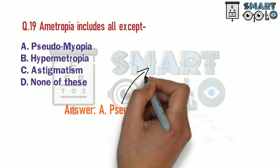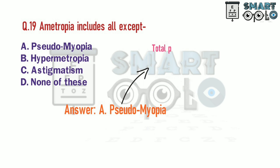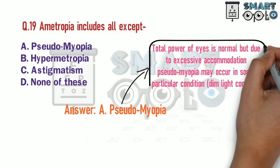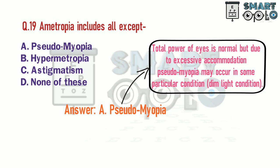Q19. The total power of the eyes is normal, but due to excessive accommodation, pseudomyopia may occur in some particular conditions like dim light conditions.